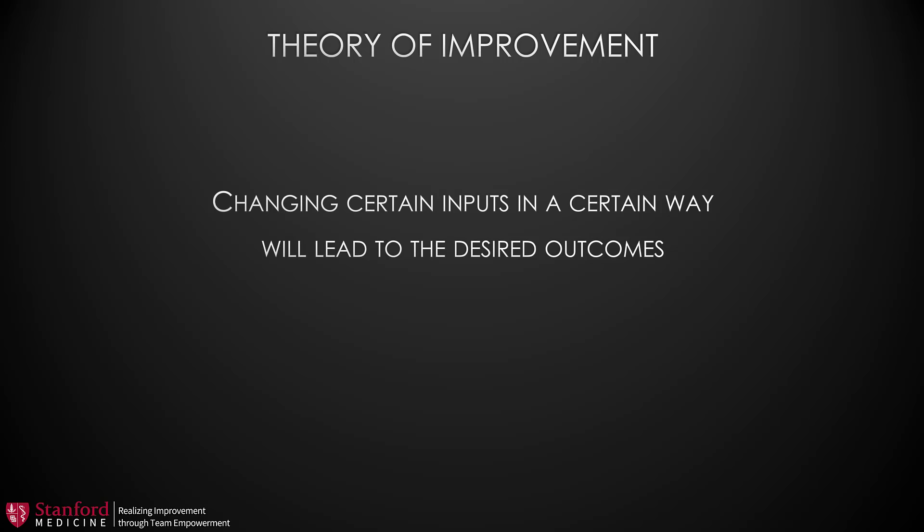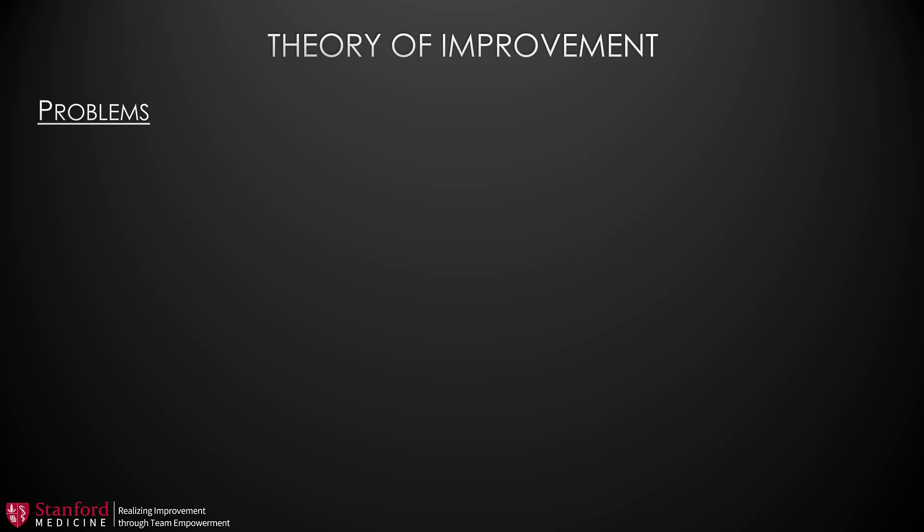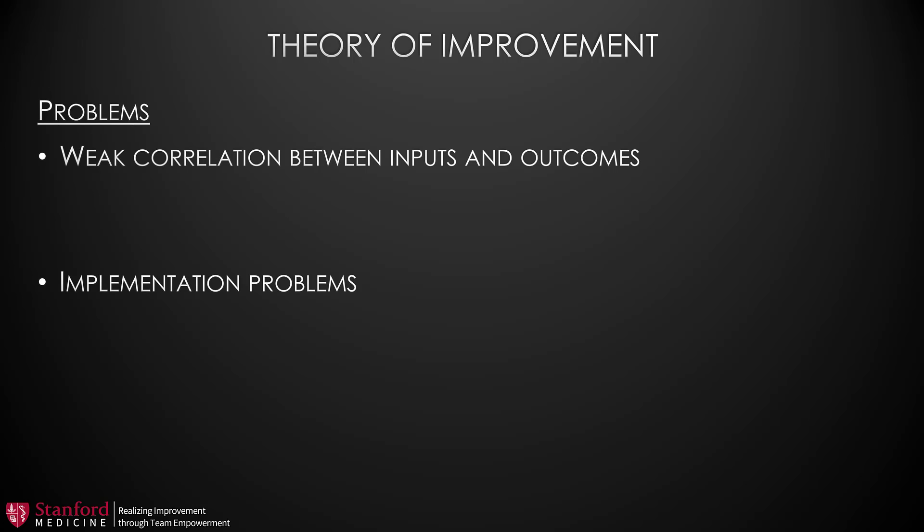This theory becomes the basis for our improvement efforts. At first, we don't know for sure whether they will work, but we think they might, so we're going to try them out and see if they work. If our theory doesn't work out — in other words, if we try our interventions but they don't result in the outcomes we're hoping for — then there may be one of two problems: either our inputs really aren't strongly related to our outcomes and thus are unable to produce our desired outcomes, or we haven't implemented the changes correctly.